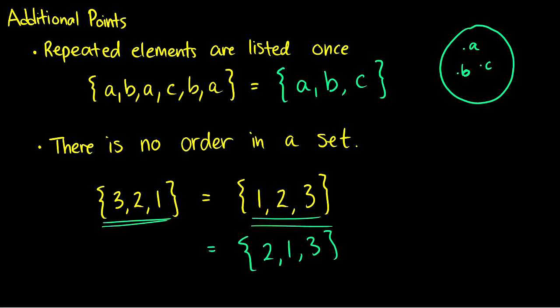So those are two pretty important properties. Usually on an exam you might be given a set that has repeated elements and they might ask how big is this set, how many things are in it? And if you're not careful about repeated elements then you might get the wrong answer.